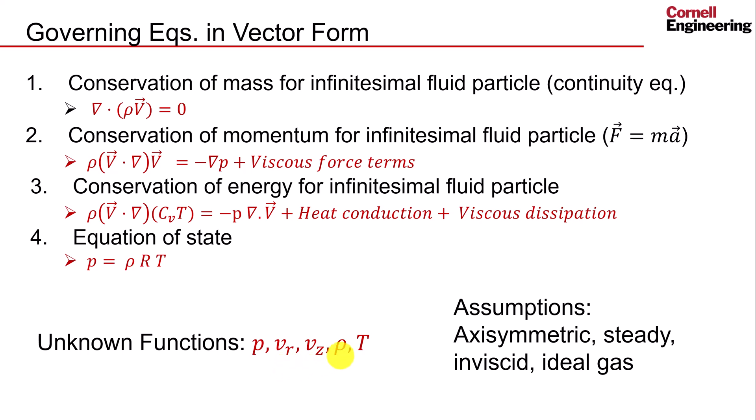The steady assumption knocks off any time-varying terms in the governing equations, which are not displayed here for simplicity. The inviscid assumption removes any viscous force terms and heat conduction, as shown here. We make this assumption because, since the Reynolds number for this high speed flow is large, the viscous effects will be confined to a small part of the flow near the wall and can therefore be neglected. Finally, the ideal gas assumption allows us to use the ideal gas law as the equation of state to close the system.